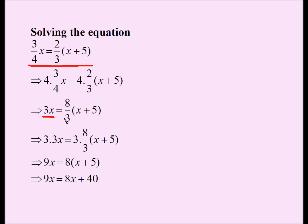Again, I need to get rid of this 3. Multiply both sides by 3. On the left-hand side I get 9x. On the right-hand side, this 3 and this 3 cancel. I get 8 times x plus 5. I distribute 8 over x plus 5. I get 8x plus 40.